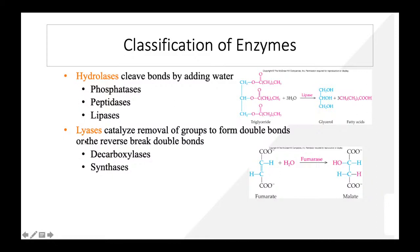Lyases catalyze the removal of groups to form double bonds, or the reverse. They break chemical bonds by means other than hydrolysis or oxidation. Examples include decarboxylases, which remove a carboxyl group forming CO₂. For instance, fumarate with a double bond between two carbons, in the presence of H₂O, breaks the double bond and is converted to malate.